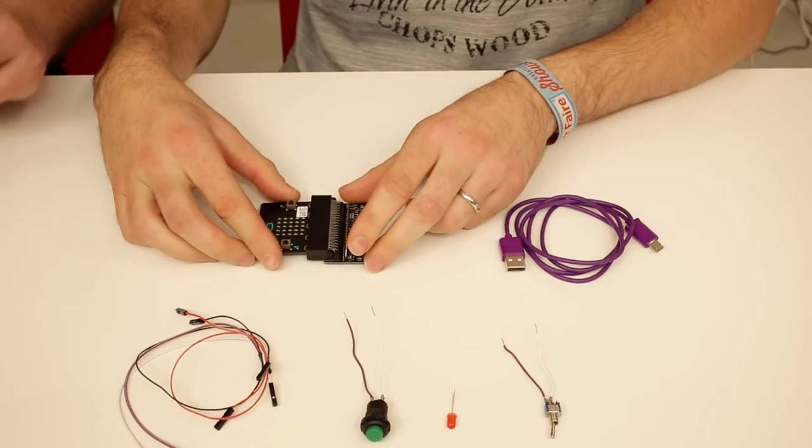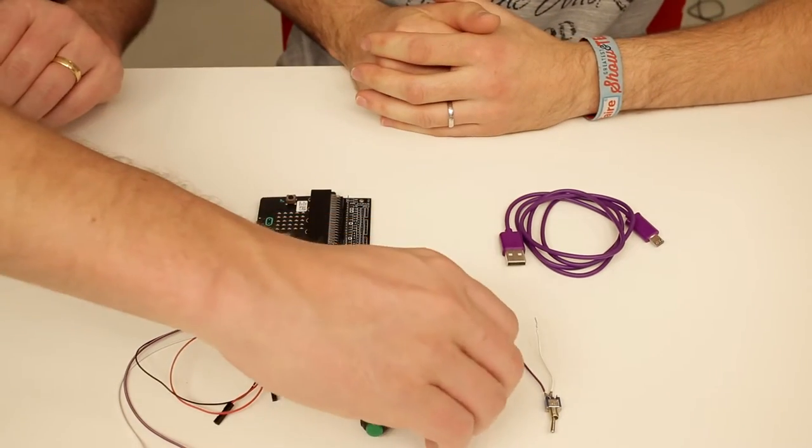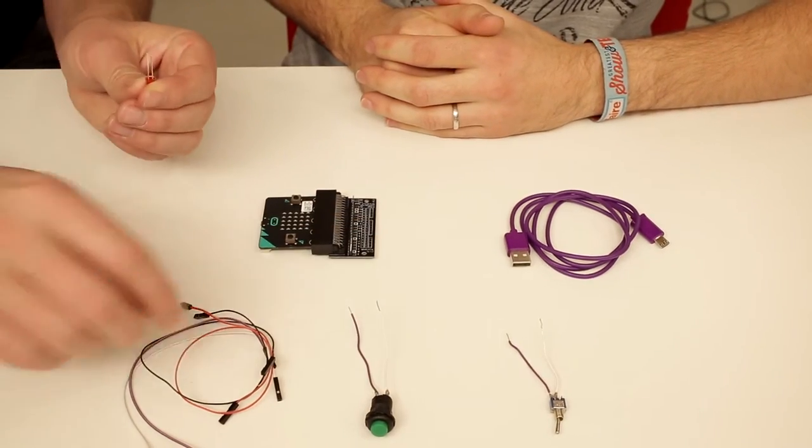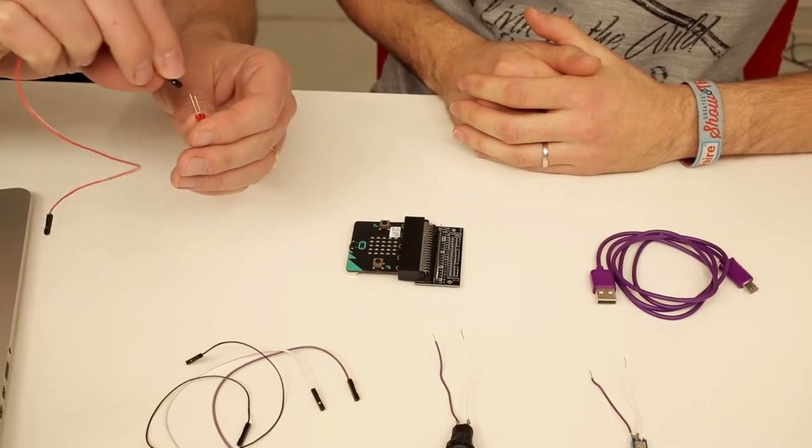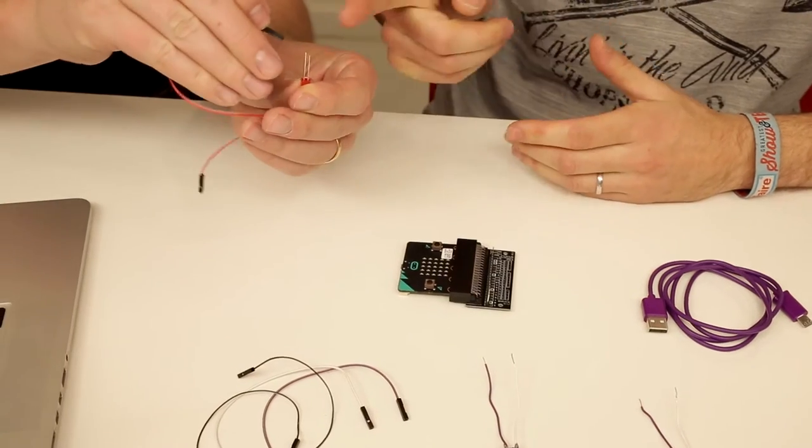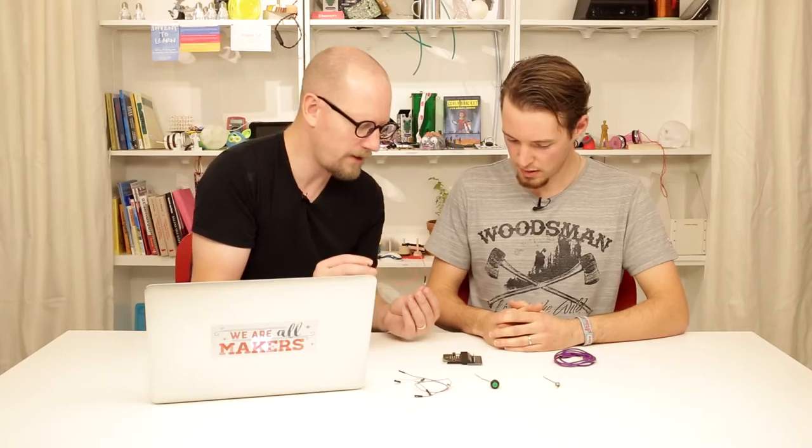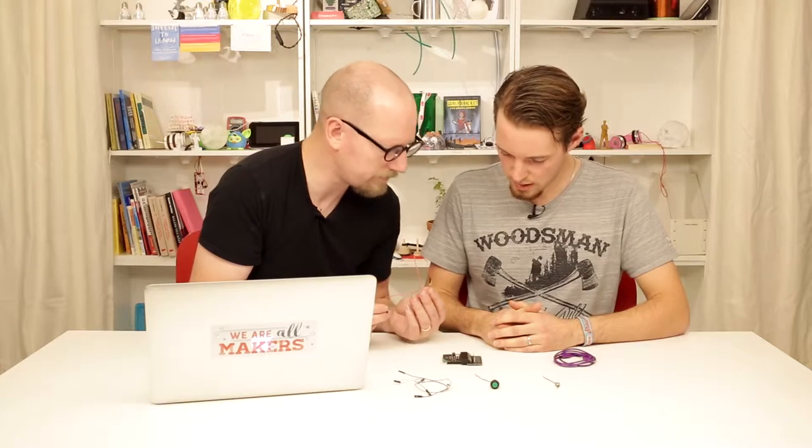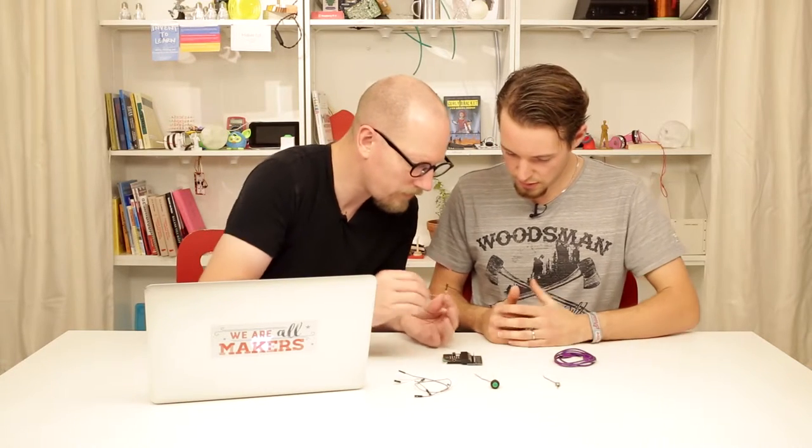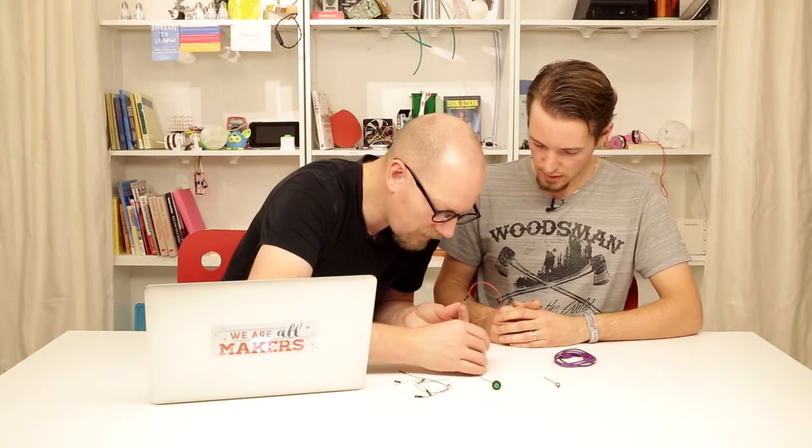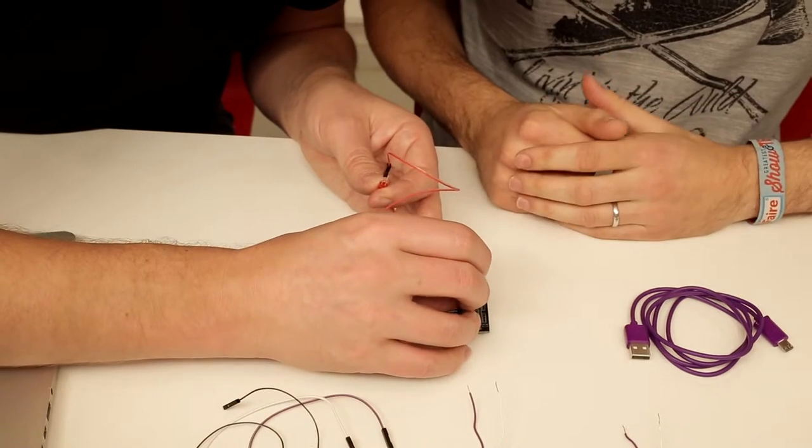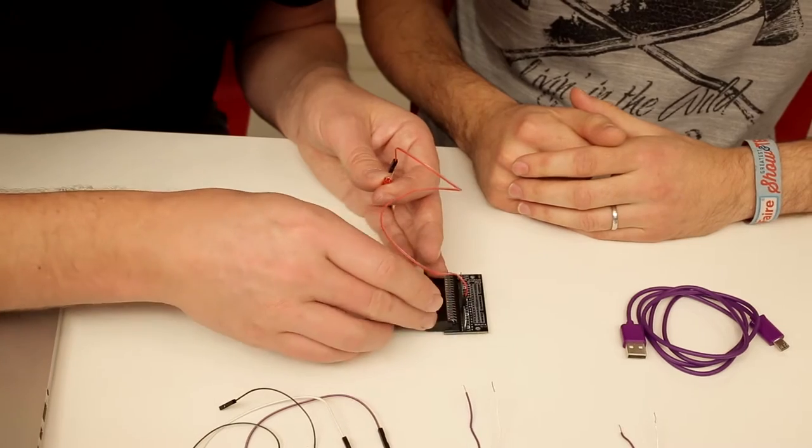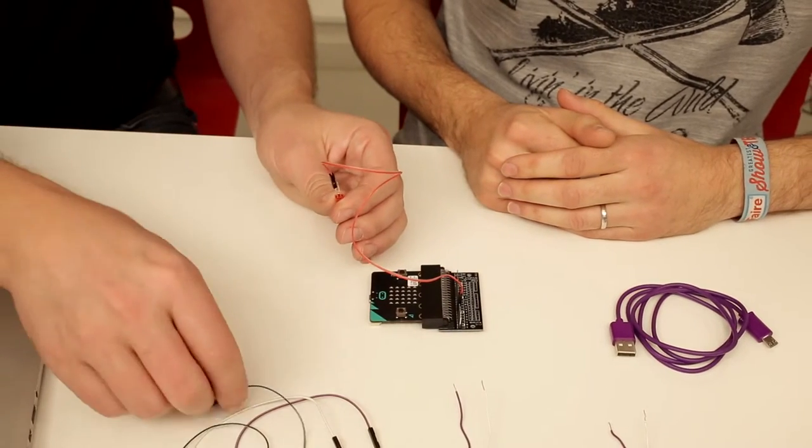Put the micro:bit in there and I'll connect the red prototyping cable to the plus—the long leg is the plus. That one goes to, for example, pin one. You have small numbers on this board to tell you which pin it is. Then I'll take a black cable for the minus and that will go to ground, which is called zero volt.